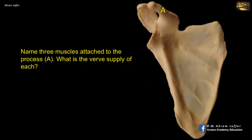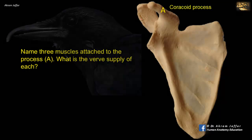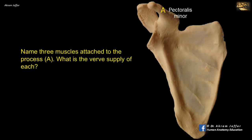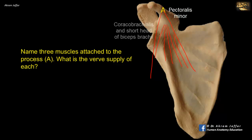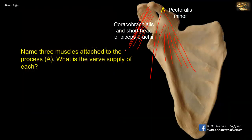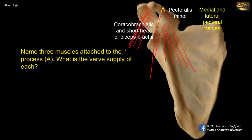Name three muscles attached to process A. What is the nerve supply of each? Process A is the coracoid process. It is named so because it looks like a crow's beak. The three muscles attached to the coracoid process are pectoralis minor attached anteriorly — it is triangular in shape — and at the tip of the coracoid process there is a common origin of two muscles: the short head of biceps and coracobrachialis. Regarding the nerve supply, pectoralis minor is supplied by the medial and lateral pectoral nerves. Biceps brachii and coracobrachialis are both supplied by the musculocutaneous nerve.